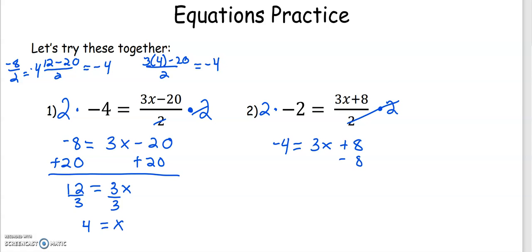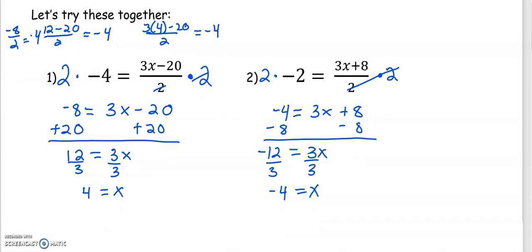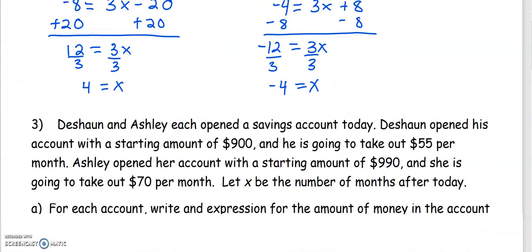We'll subtract 8 as we work on this two-step equation. Careful with your integers. You'll get negative 12 equals 3x, divided by 3, and we'll have negative 4 equals x.